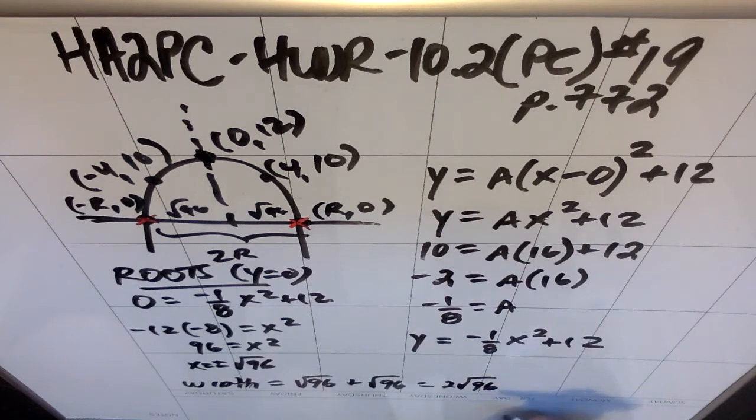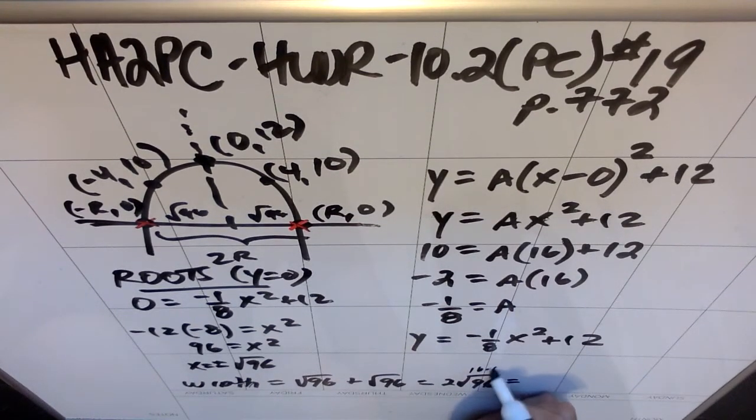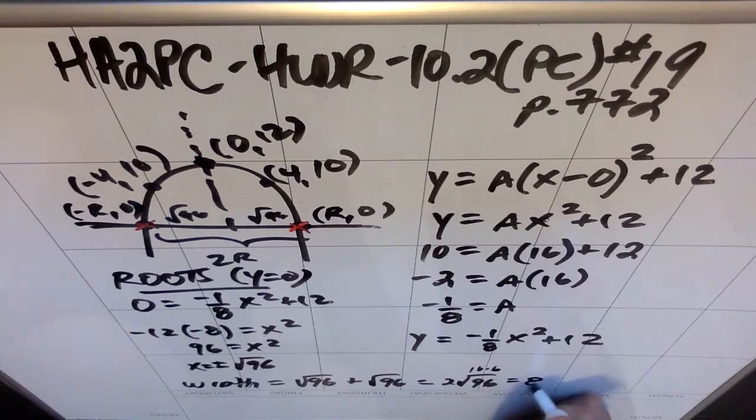Certainly there are numbers you can take out of this. You could take a 16 out of this. Because that should be 16 times 6. So if you really wanted, you could make this 16 times 6. So you could take a 4 out and make this 8√6,